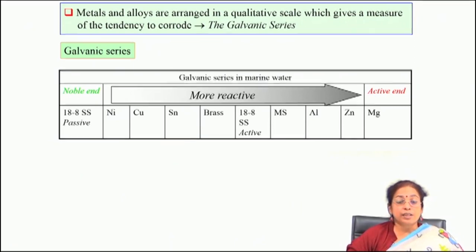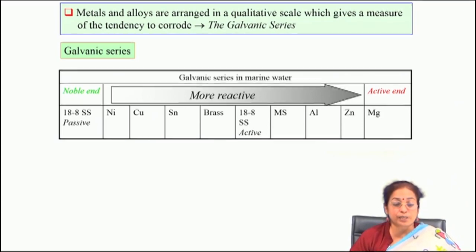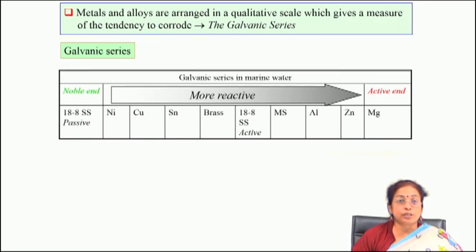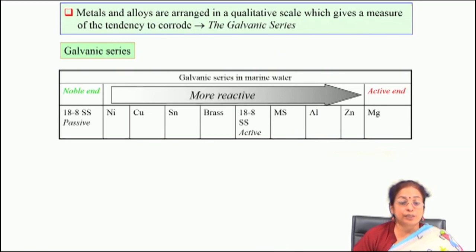For general corrosion or atmospheric corrosion in normal environments, the standard EMF series plays a very important role in material selection. But when you talk about the application of metals and alloys in actual service environments, the series which is applied is the galvanic series. The galvanic series gives information about the relative corrosion potential of different metals and alloys in different environments, and plays a very important role in choosing materials for galvanic combinations.